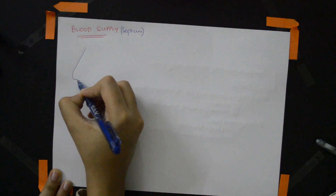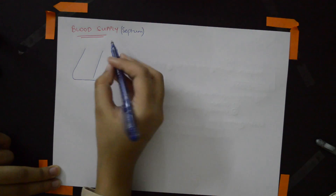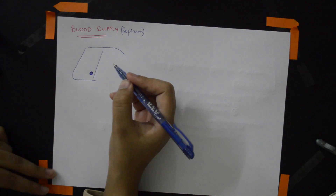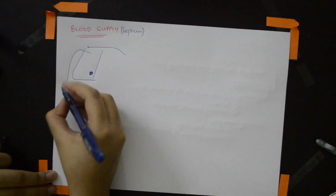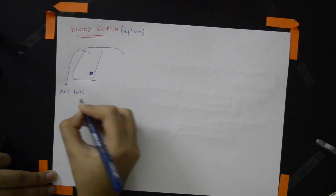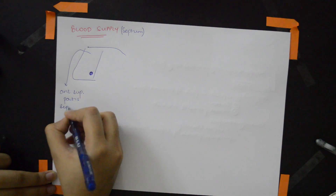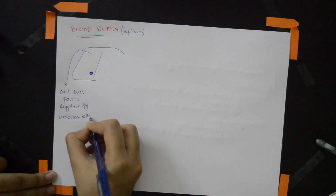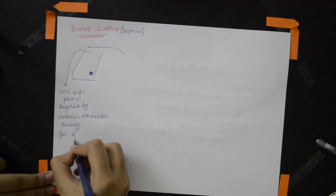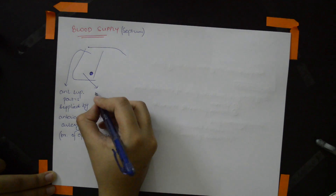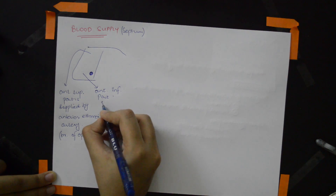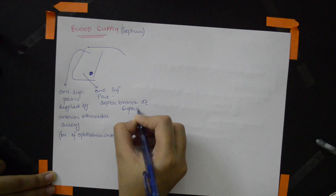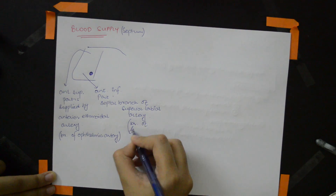Now the blood supply of the septum. Let's make a drawing. The anterior superior part is supplied by the anterior ethmoidal artery, which is a branch of the ophthalmic artery. The anterior inferior part is supplied by the septal branch of the superior labial artery, which is a branch of the facial artery.